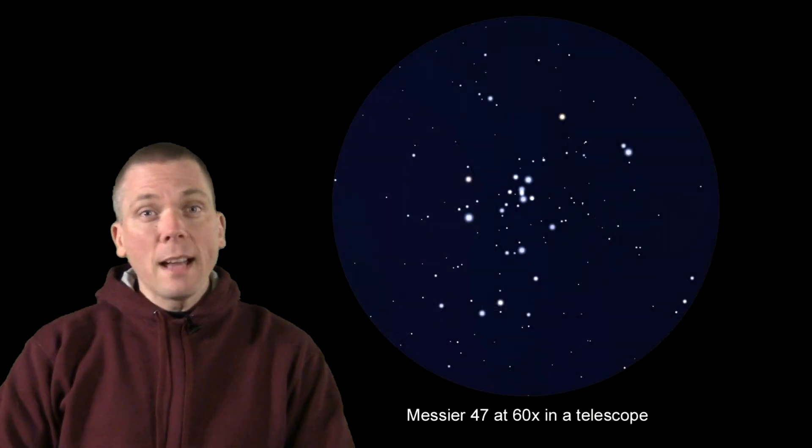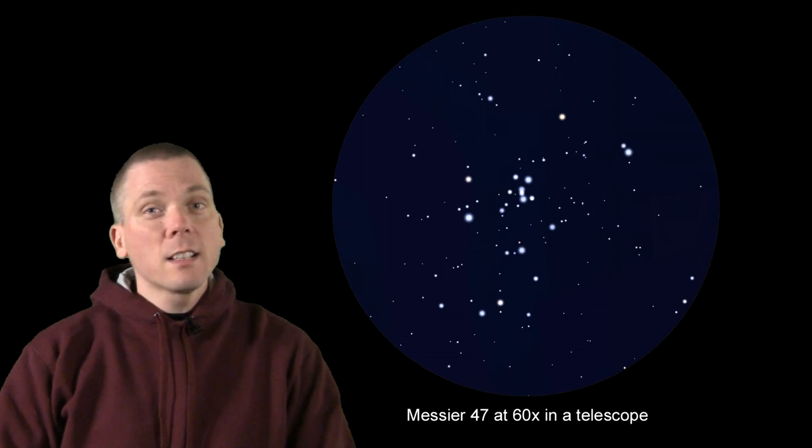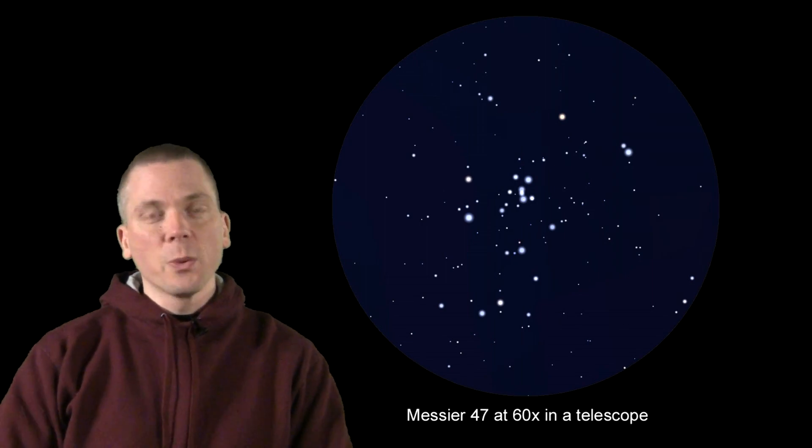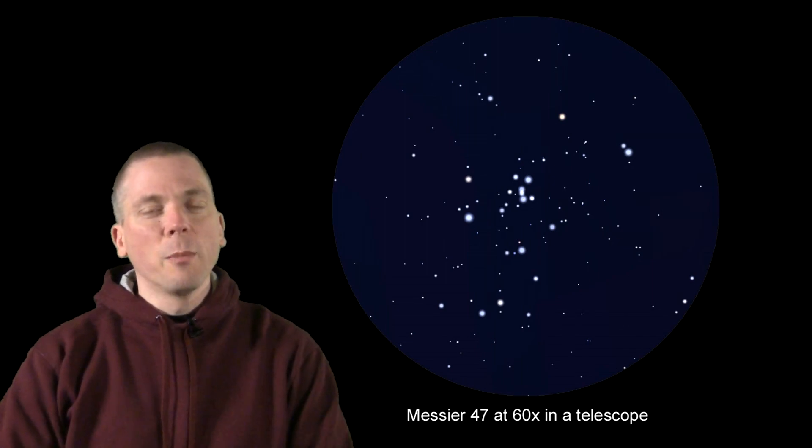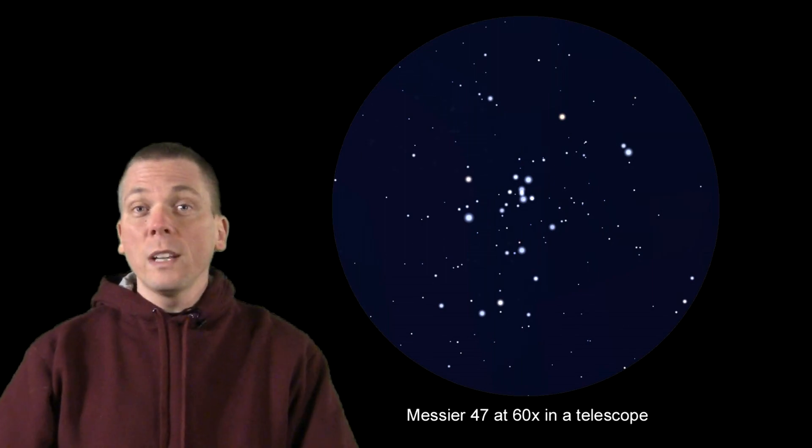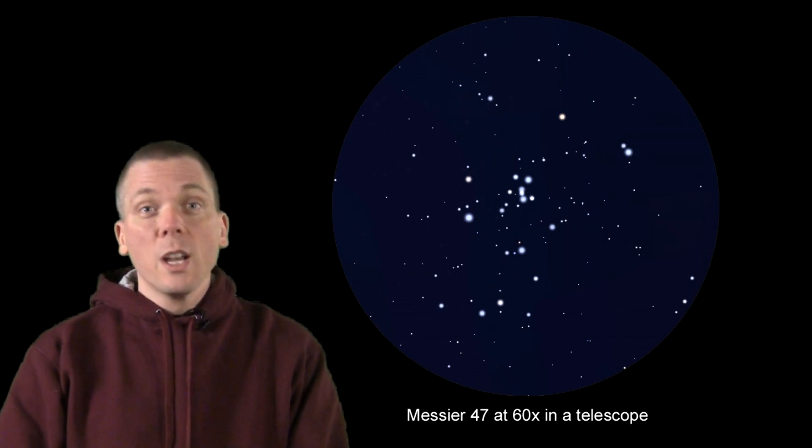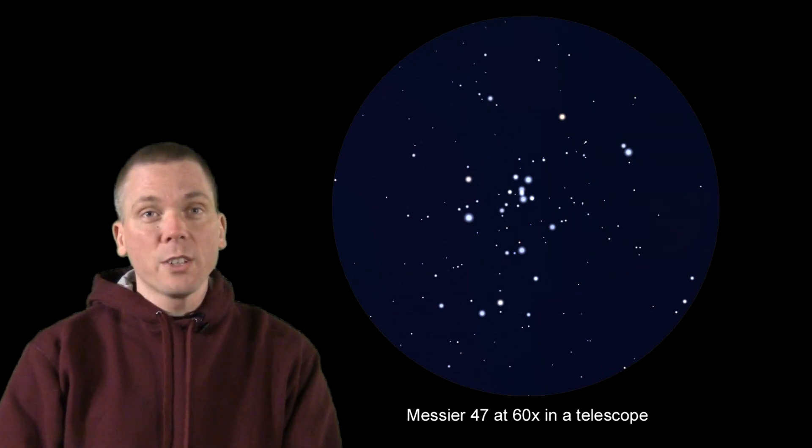With about a dozen suns at 8th magnitude or brighter in a span the size of the full moon, and keeping in mind this cluster is only 1,600 light years away, this cluster will be brighter, but maybe look less impressive and somewhat unstructured. In addition, there are only about 50 or so cluster members, spread out over 12 light years of actual distance.